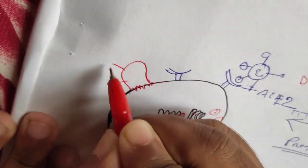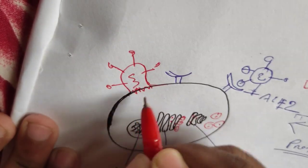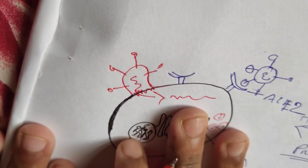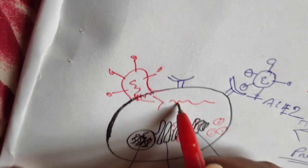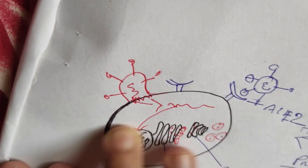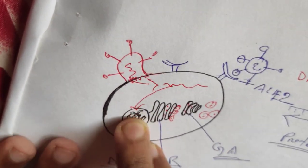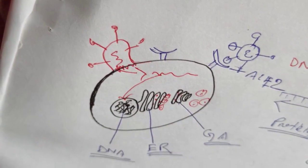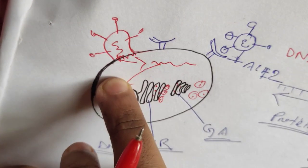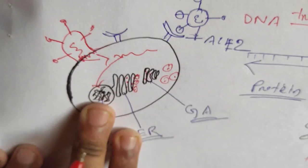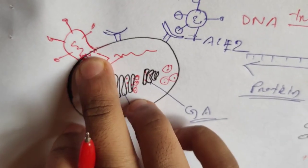Then the virus's genetic material transfers into the cytosol of the cell. This RNA makes its way to the nucleus. The nucleus has a pore, and through this pore the RNA enters the nucleus. When it enters the nucleus, it hijacks the cell — the cell then does everything according to the virus. Instead of replicating and producing the cell's own DNA, it will produce the virus RNA.